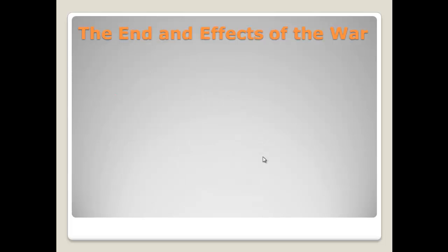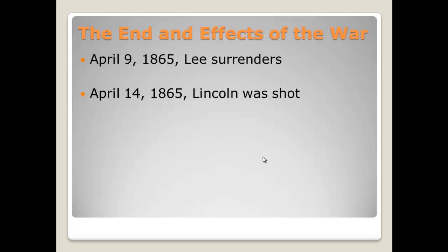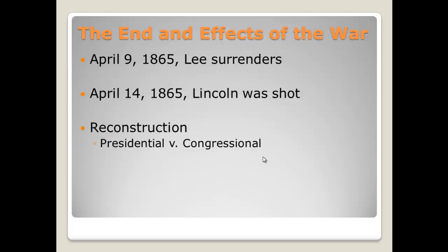On April 9th, 1865, General Robert E. Lee of the South surrendered — for all intents and purposes the Civil War was over, although some fighting still occurred. Five days later, on April 14th, Lincoln was shot, and Vice President Johnson became president. Then followed an era known as Reconstruction. A big question about Reconstruction is who will be in charge — the president or Congress. The key Reconstruction amendments are the 13th, 14th, and 15th amendments.